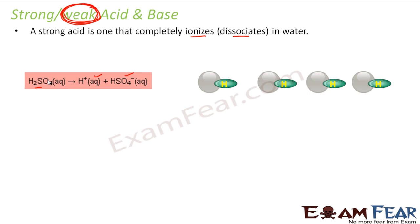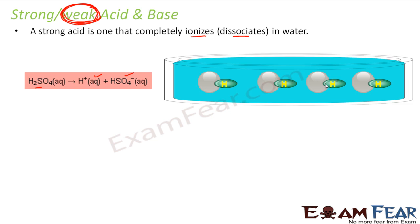To see this graphically: imagine there are 4 molecules of a strong acid. The moment you put them in water, all 4 molecules — which had H⁺ ions attached — break apart and release their H⁺ ions. Almost 100% are ionized. This shows a very strong acid: 4 molecules went in, all 4 gave H⁺ ions — almost 100% ionization.